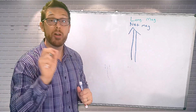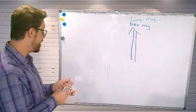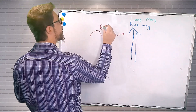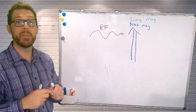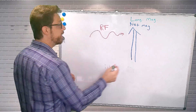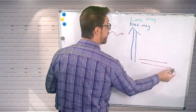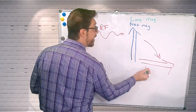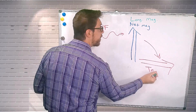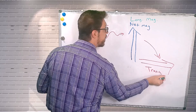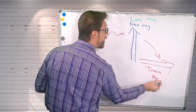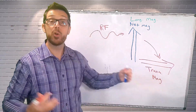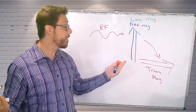Now we deliver an RF pulse to our patient. If I go ahead and deliver an RF pulse, I take this net magnetism and shift it 90 degrees into the transverse plane. We call this transverse magnetization. When we have our magnetic vector in the transverse plane, we have transverse magnetization.